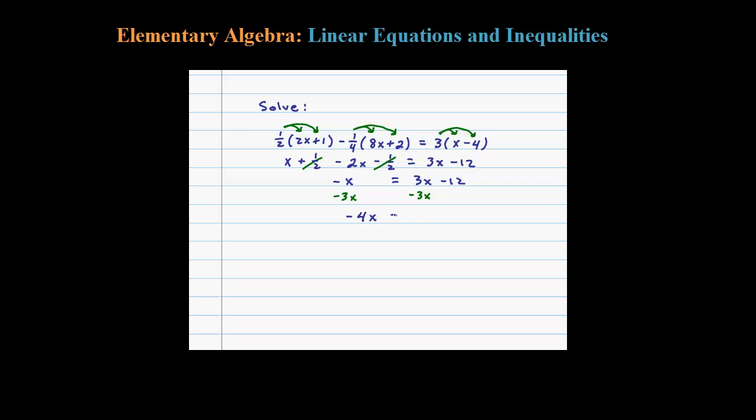Negative 4x equals negative 12. To get x by itself, it looks like we need to divide both sides by not just 4 but negative 4. If you divide by negative 4, this entire negative 4 cancels and leaves you with 1x. So 1x equals negative 12 divided by negative 4, which is 3.